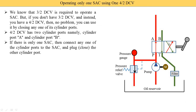Suppose we use this 4/2 DCV — we are able to connect two single acting cylinders, where A port connects to cylinder A and B port connects to cylinder B. But here we have only one single acting cylinder, so we have the option to either block port A or block port B. Here we block the B connection port — you see the sign of the cross. No oil is supplied from port B to the hydraulic system because it is blocked.